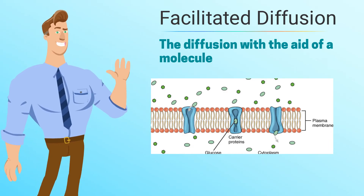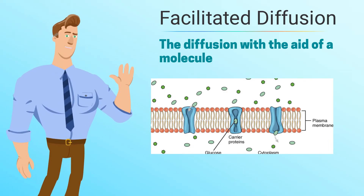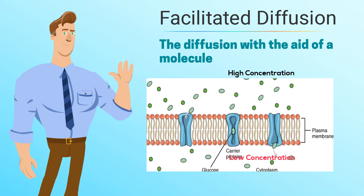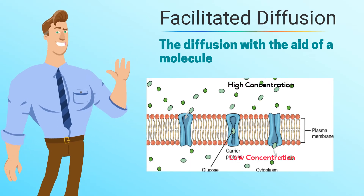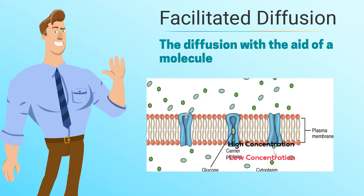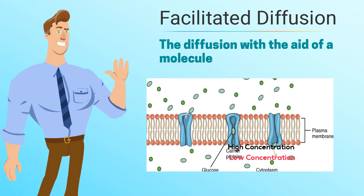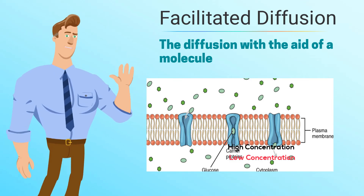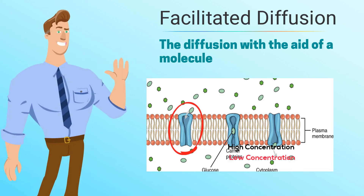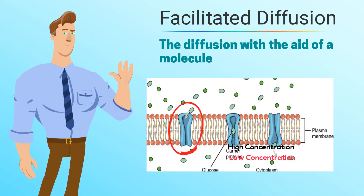For example, some ions use a protein channel to move in and out of the cell. They are still moving from high to low, so it is considered passive transport, but it is called facilitated diffusion because a protein channel is used.